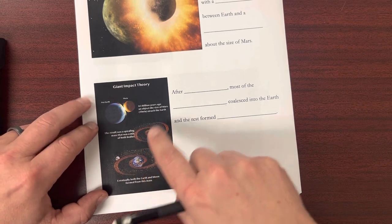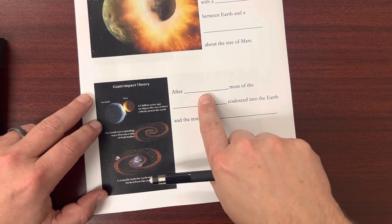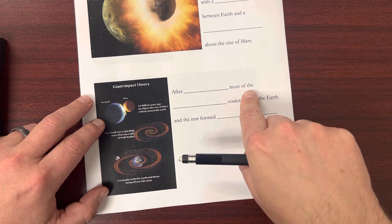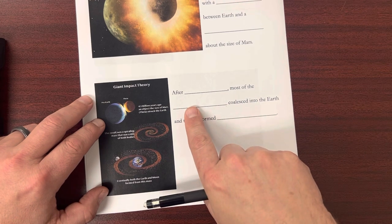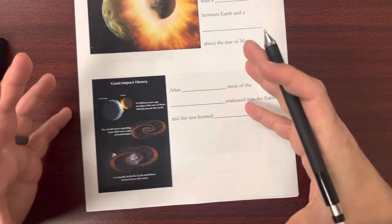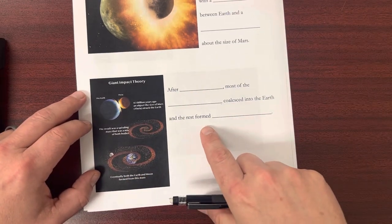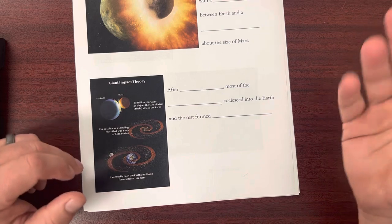So after the impact of these two bodies, most of the material coalesced—coalesced means comes together—into the Earth and the rest formed the moon that we see today.